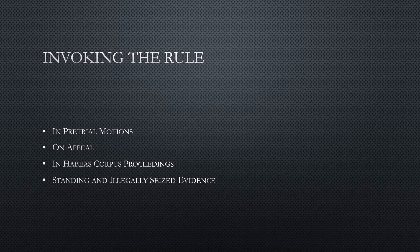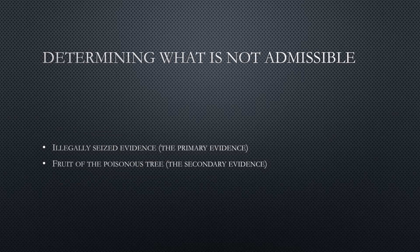The other question is: what illegal evidence are we talking about? There is primary evidence and there is secondary evidence — the fruit of the poisonous tree. Illegally seized evidence is the primary evidence: that could be contraband, instruments of crime, or evidence like a shirt that has blood on it. But there's also secondary evidence. The fruit of the poisonous tree doctrine states that once the primary evidence has been shown to be unlawfully obtained, any derivative secondary evidence is also inadmissible.